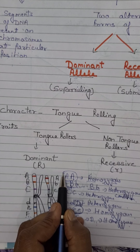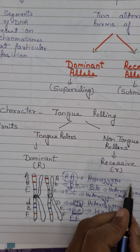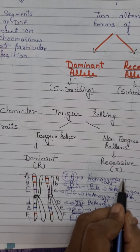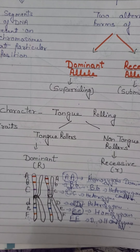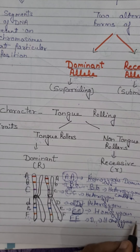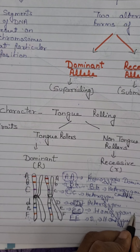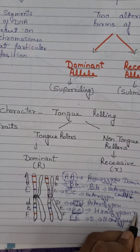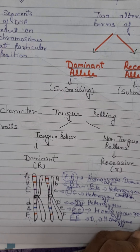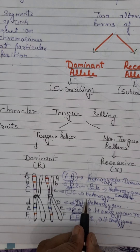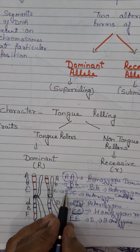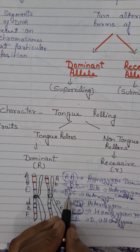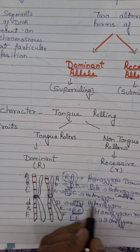In homozygous condition, if both alleles are dominant we call it homozygous dominant, and if both alleles are recessive we call it homozygous recessive. Heterozygous conditions are always of the dominant type, because one of the alleles is dominant and it will always be expressed.